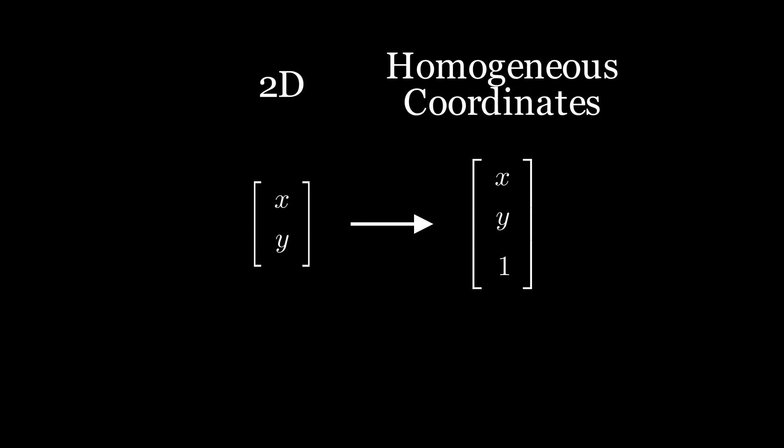If I give you a point x,y in 2D and ask you to represent it in 3D, you would probably choose z equal to 0. With homogeneous coordinates, we place the point on the z equal to 1 plane.